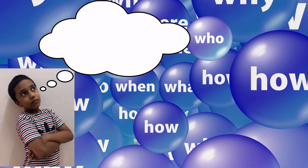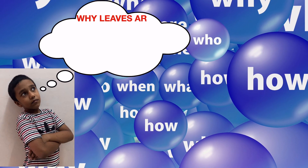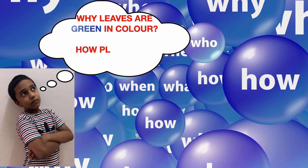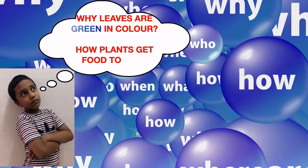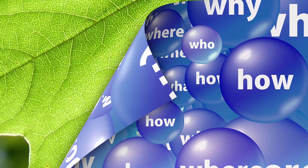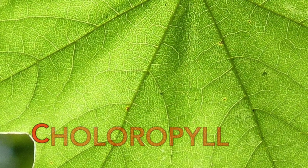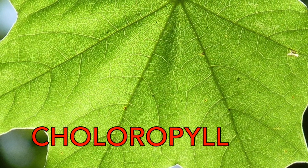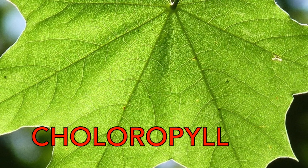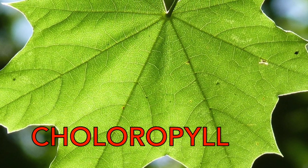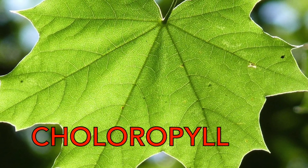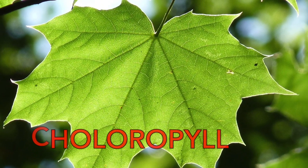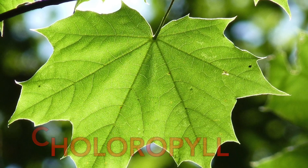I was thinking: why are leaves green in colour? And how do plants get food to live? The answer to the first question — why are leaves green in colour? — is that leaves look green because of the presence of an important chemical called chlorophyll. It helps the plant to make food.